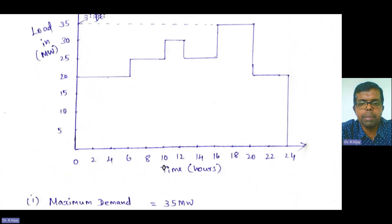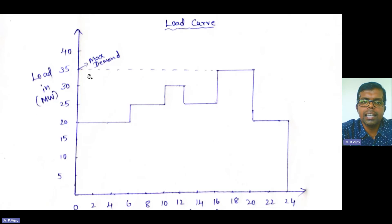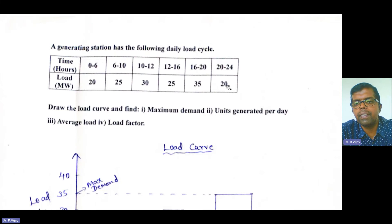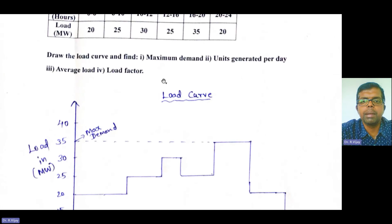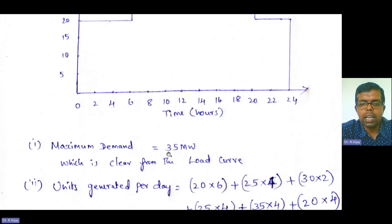Next, what is the maximum demand? From the load curve, it is clearly seen that the maximum demand is 35 megawatt. You can also find it directly from the data: looking at 20, 25, 30, 25, 35, 20 — the maximum value is 35 megawatt.